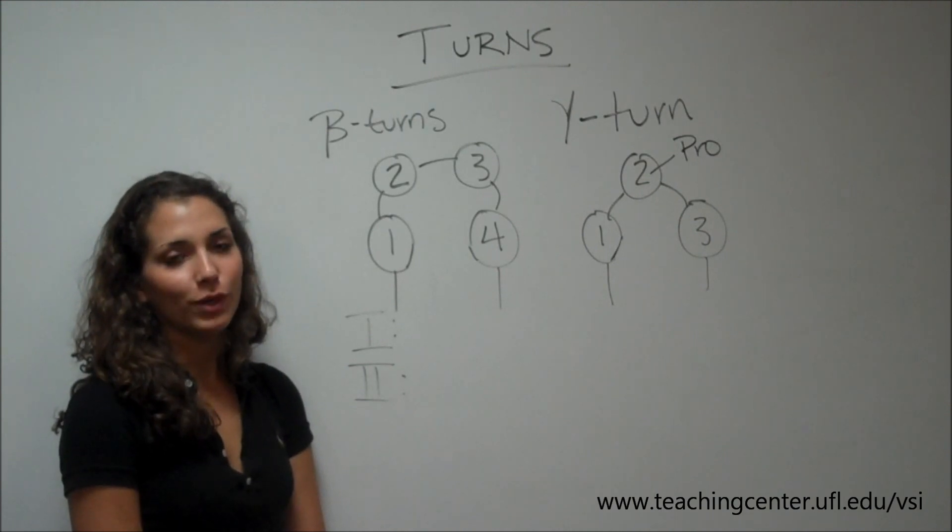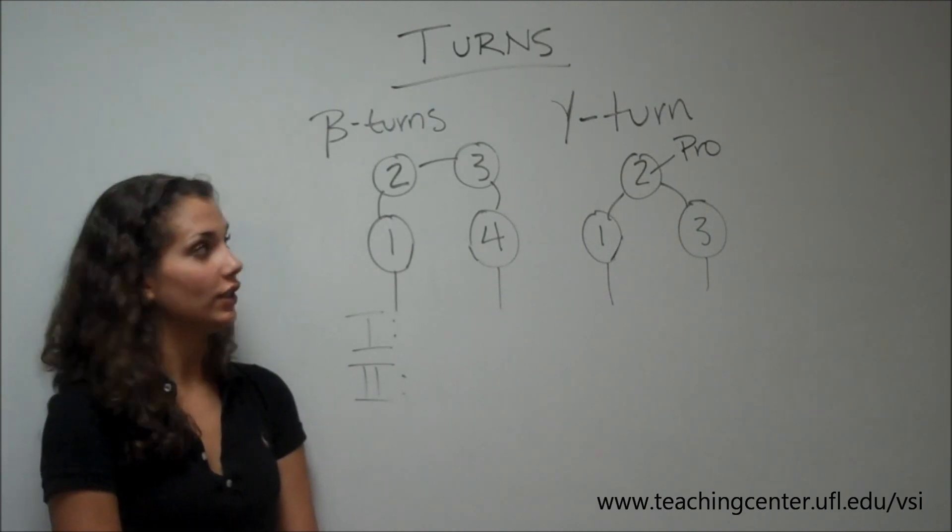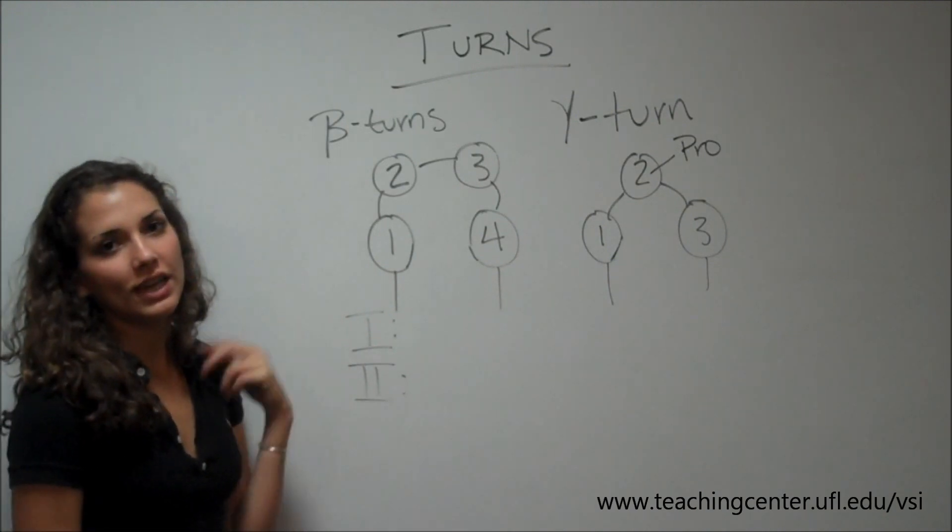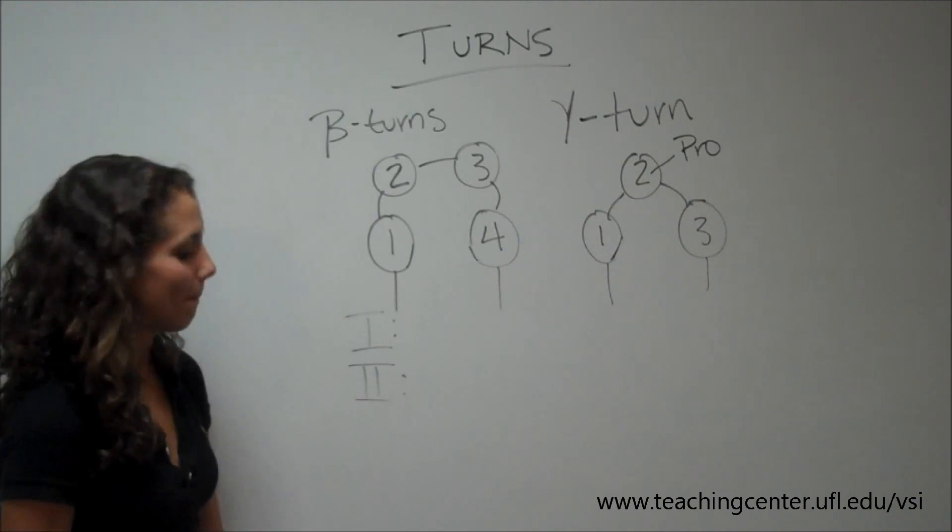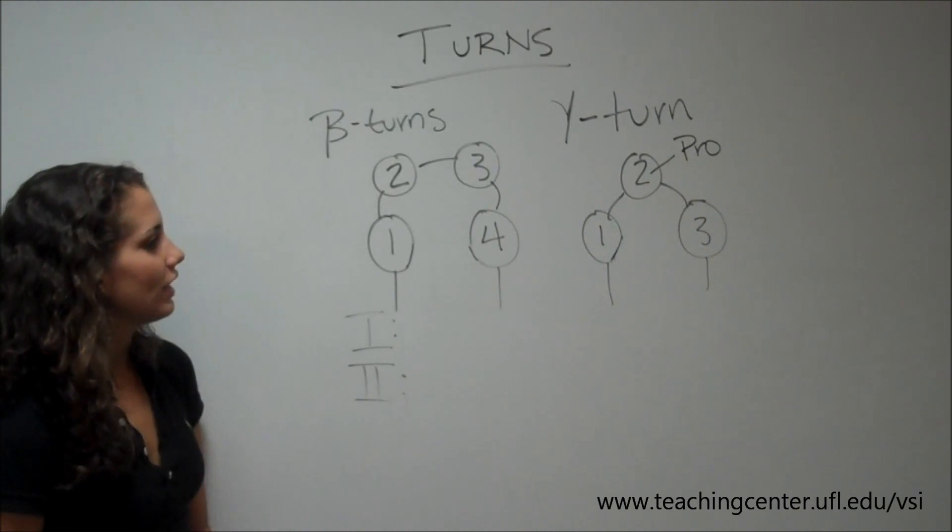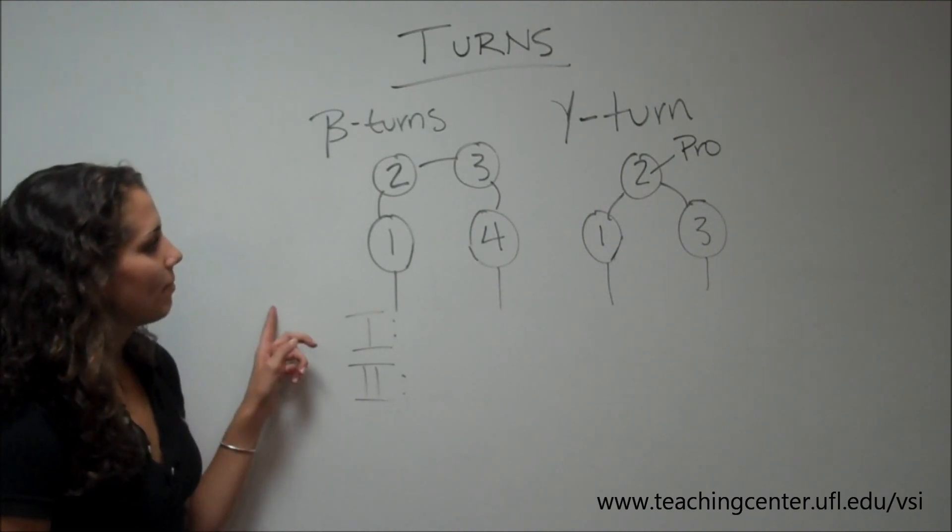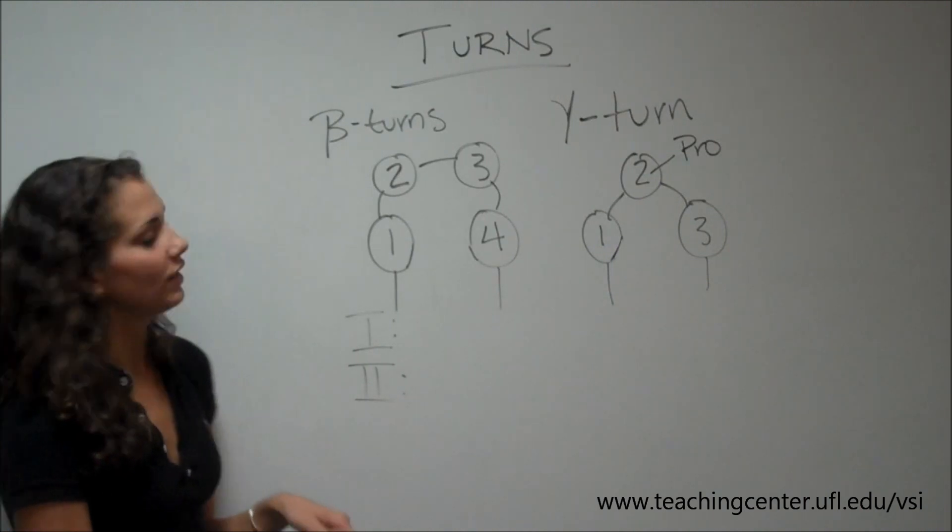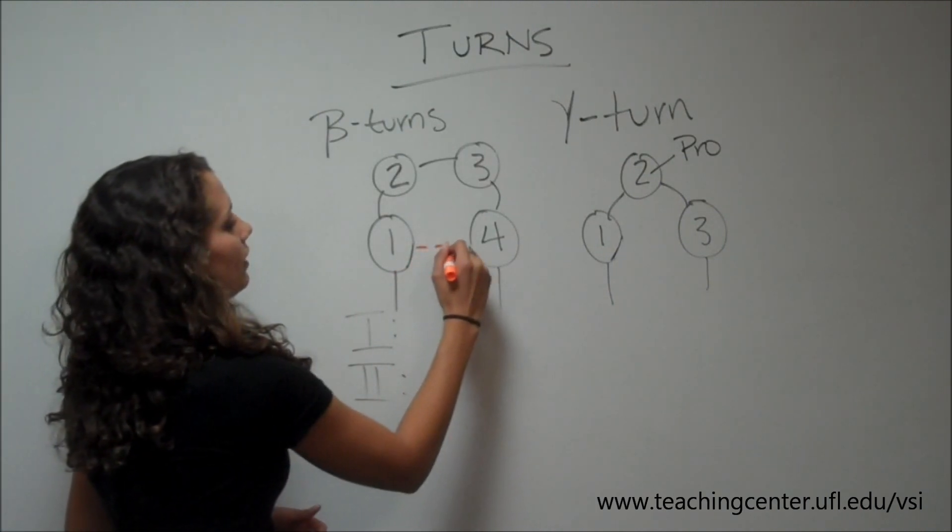Another structural element of proteins that you should be aware of are turns. There are beta turns and gamma turns. Beta turns connect anti-parallel sheets of beta strands in a 180 degree turn. There are type 1 beta turns and type 2 beta turns, but in both types, the first and the fourth residues are hydrogen bonded to each other.